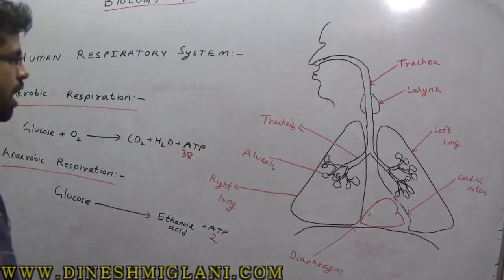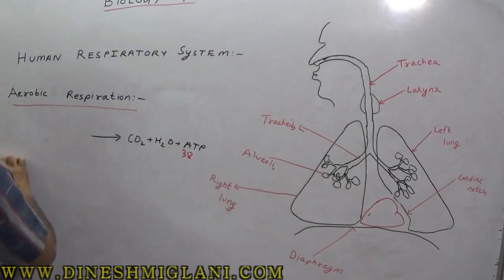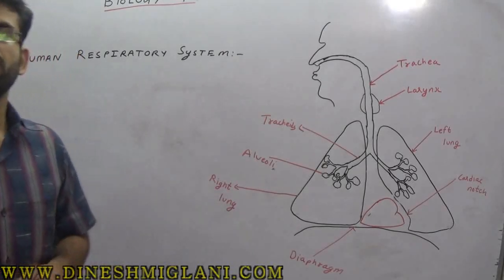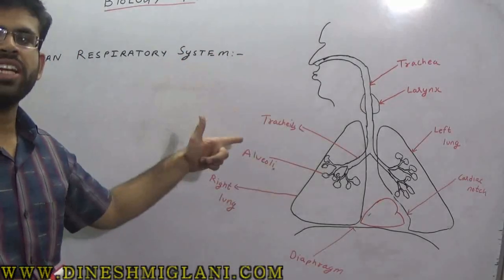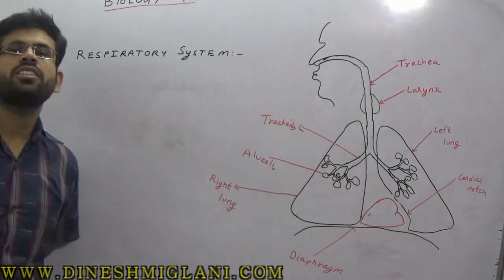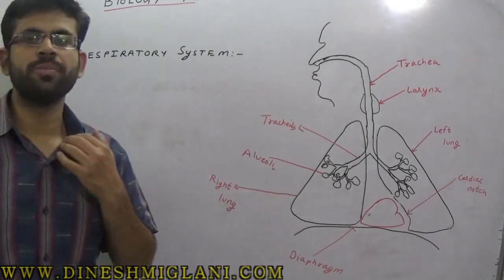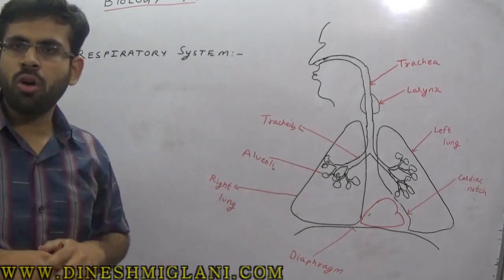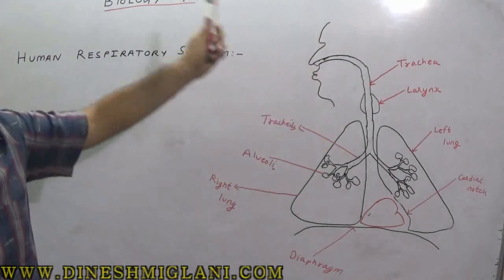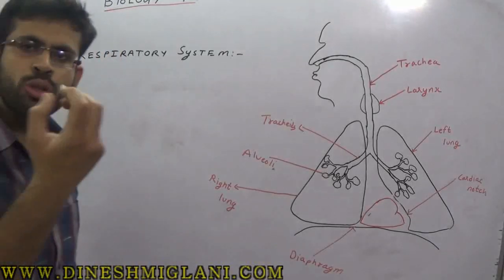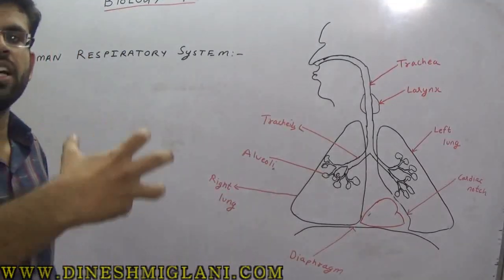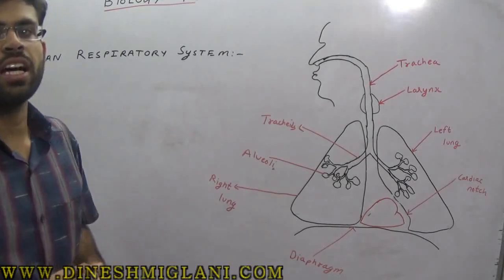The respiratory system is responsible for how this is done. It is composed of the nose, trachea (the wind pipe), and the lungs. Our respiratory system starts from the nose. The nose has two nasal pores and purifies the air. Nasal hairs trap dust from the air so it doesn't reach the lungs.